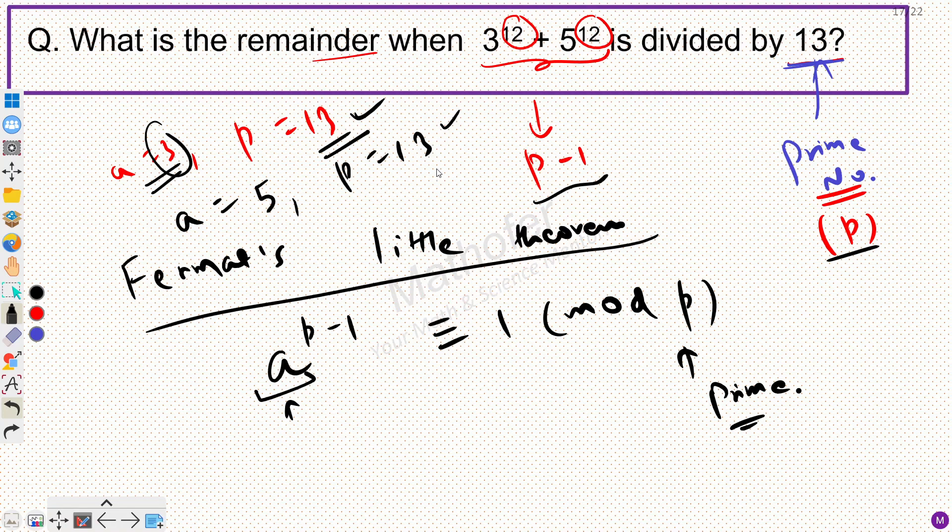So in this question we'll need to apply Fermat's Little Theorem two times, one time on 3 and another on 5. Let's apply on 3. By Fermat's Little Theorem, can I say that 3 raised power 13 minus 1 is congruent to 1 modulo 13? Because this is p and this is p minus 1. So we can say that 3 raised power 12 is congruent to 1 modulo 13.